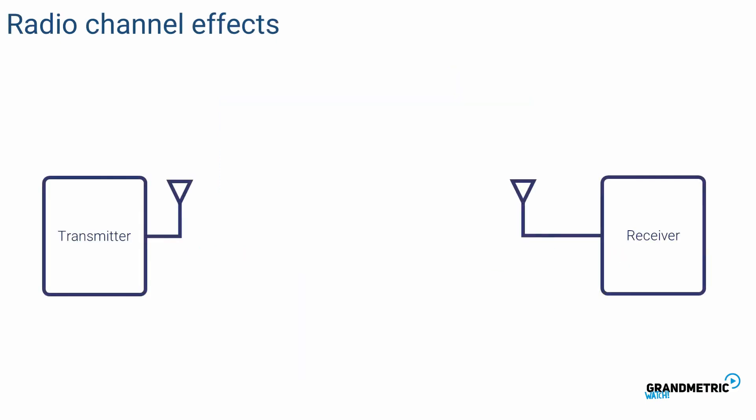In the channel signal can be distorted or attenuated. Let's see in a little bit more detail what effects can be distinguished in a radio channel. First of all there is a path loss which is a power decrease with the distance. Then wave can reflect from big objects like buildings.